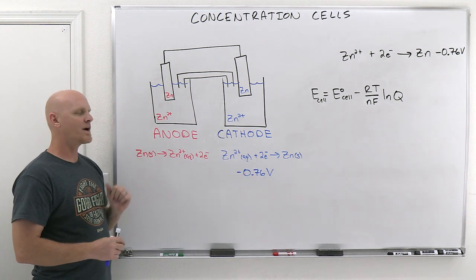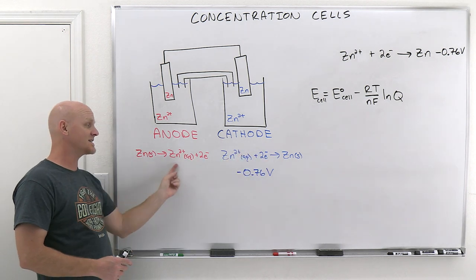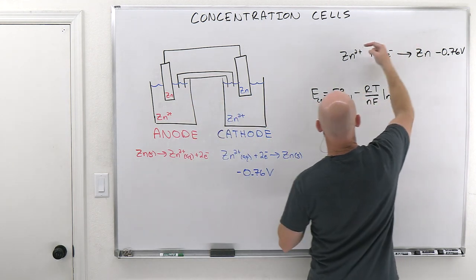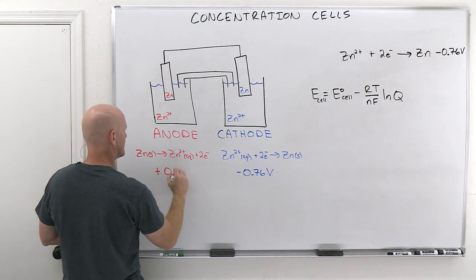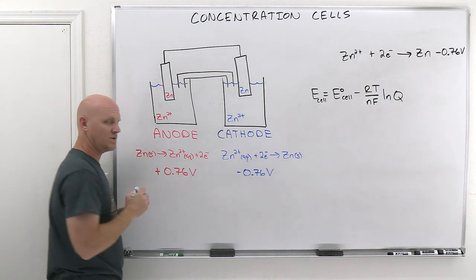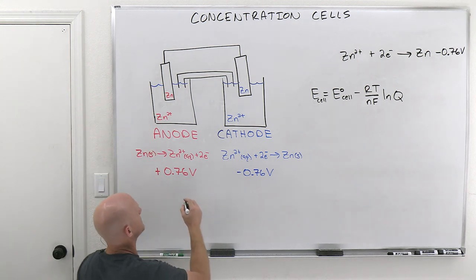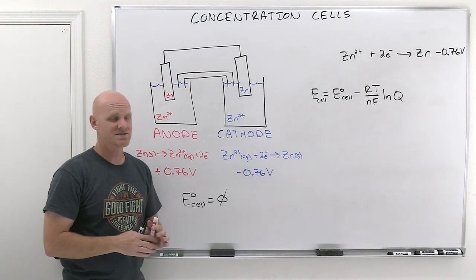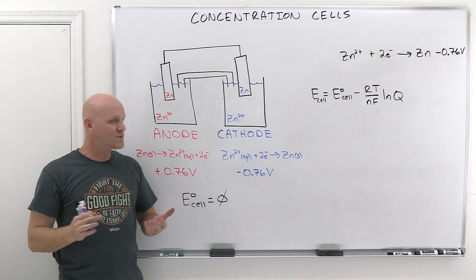But on the anode, it's the exact reverse reaction. Instead of zinc two plus turning into zinc, now you've got zinc solid turning into zinc two plus. And if you're doing the reverse reaction, or reverse half reaction, the oxidation, well then we can change the sign, and that's going to be positive 0.76 volts, which means we have a problem, because that means overall your standard E cell is going to equal a big fat zilch for any concentration cell. So well that's not spontaneous, right? That's an equilibrium.